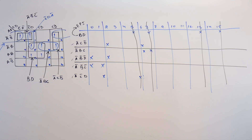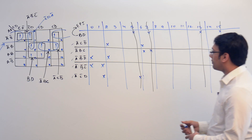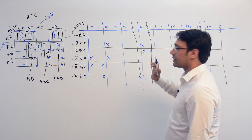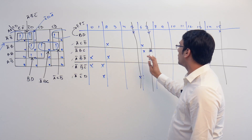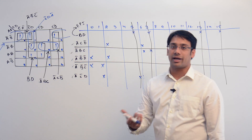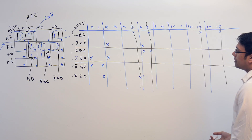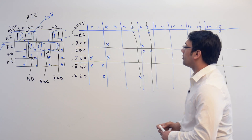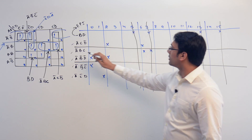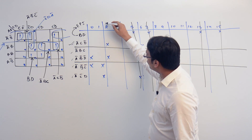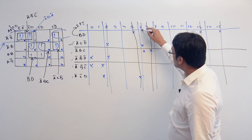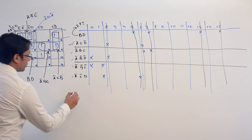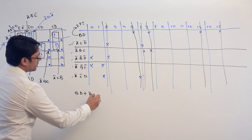If you take A'CD', it is covering minterms 2 and 6. If you take A'BC', it is only covering 6. We want a term covering the maximum number of minterms, so we take A'CD' because it covers both 2 and 6. So no one else needs to cover 2 or 6, and the solution so far is BD + A'CD'.